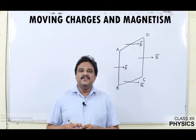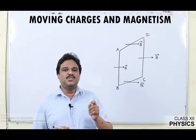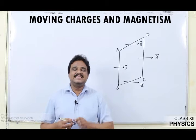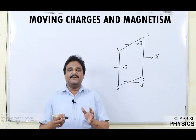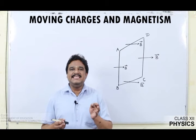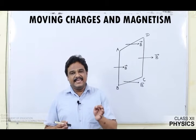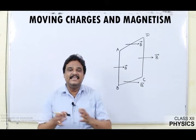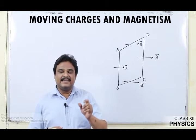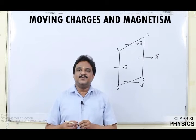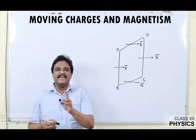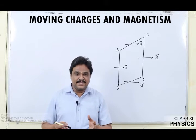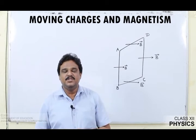We are going to derive an expression for the torque acting on a rectangular current carrying loop placed in a magnetic field. I am going to assume a rectangular loop ABCD — say it carries a current I and is suspended in a magnetic field. Under this condition, the loop will experience a torque and as such it starts rotating in the magnetic field.